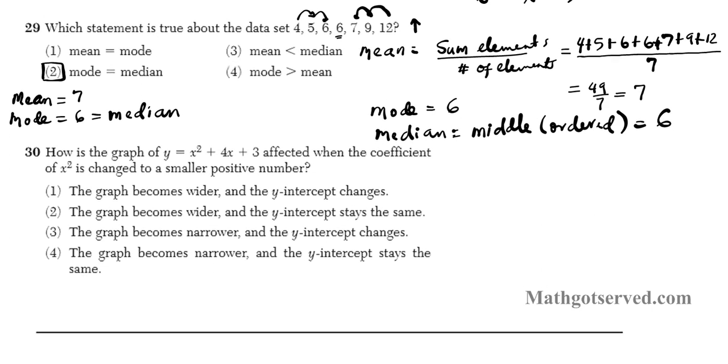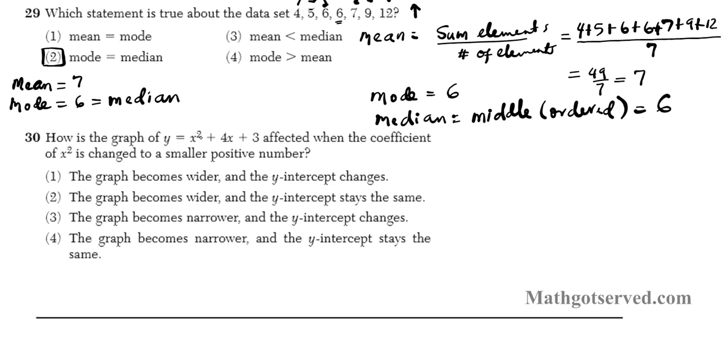Now let's take a look at question 30. It says, how is the graph y equals x squared plus 4x plus 3 affected when the coefficient of x squared is changed to a smaller positive number? So let's write down the general form. So if you have y equals ax squared plus bx plus c, if the absolute value of a gets bigger, guess what? It has an inverse relationship. The graph gets narrower. And the opposite is true, the inverse is true, vice versa. If it gets smaller, then the graph gets wider. So there's an inverse relationship between the size of a and the width of the graph, the size of the absolute value of a. And what is c? c equals the y-intercept.